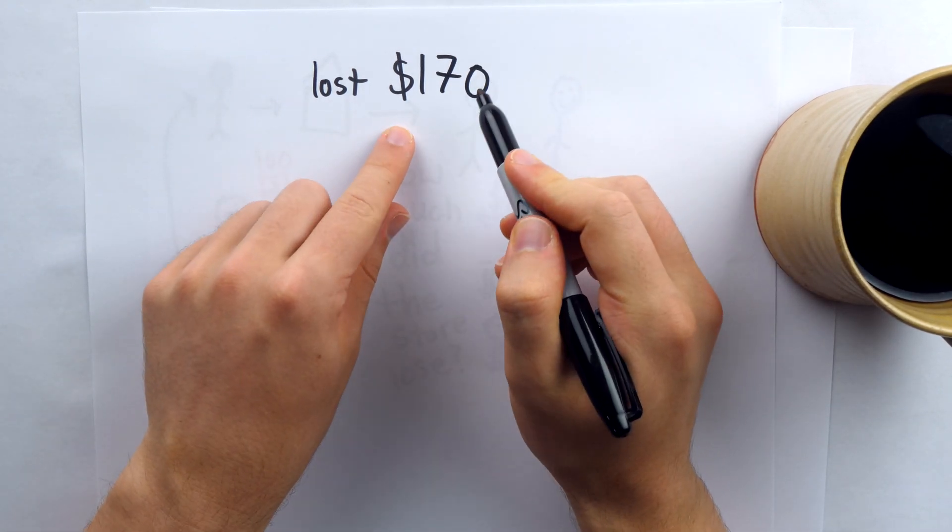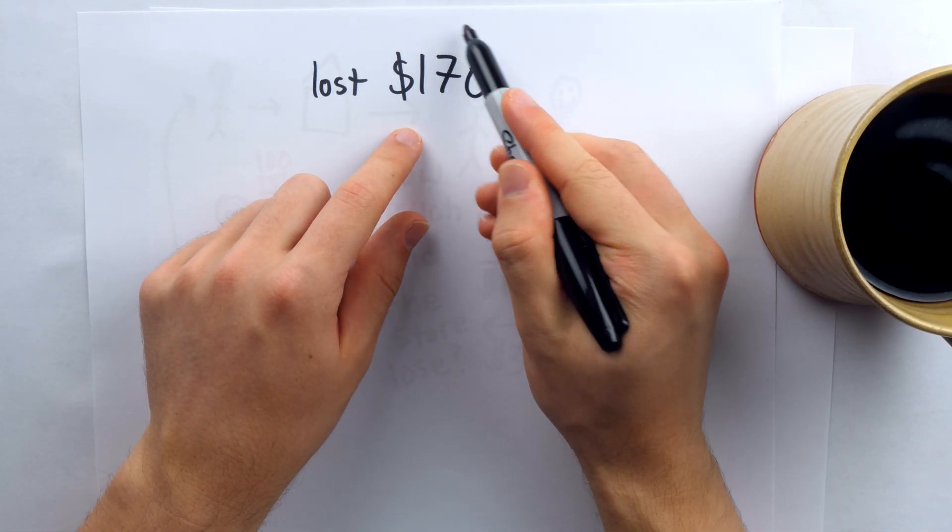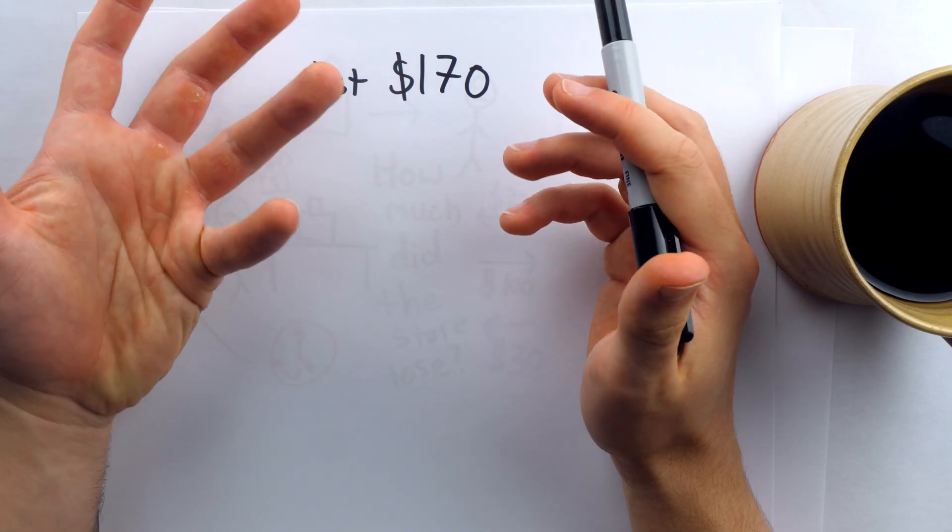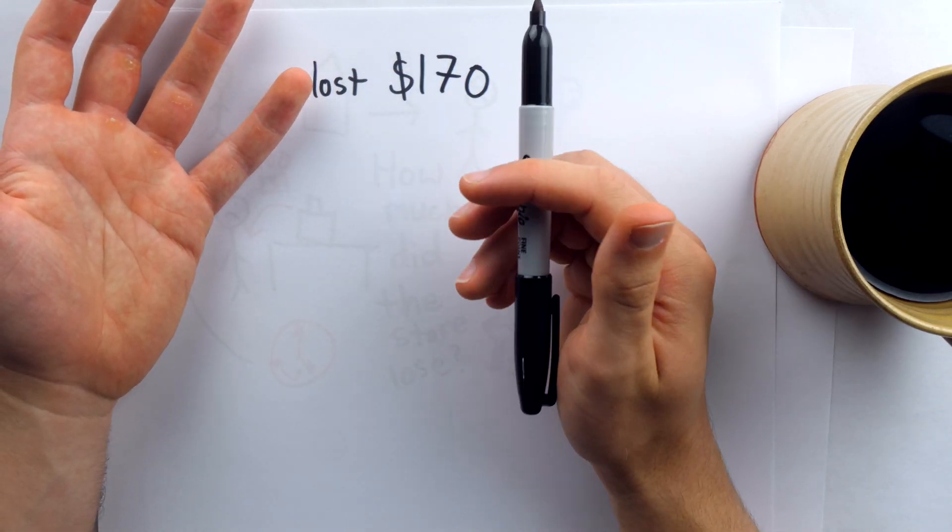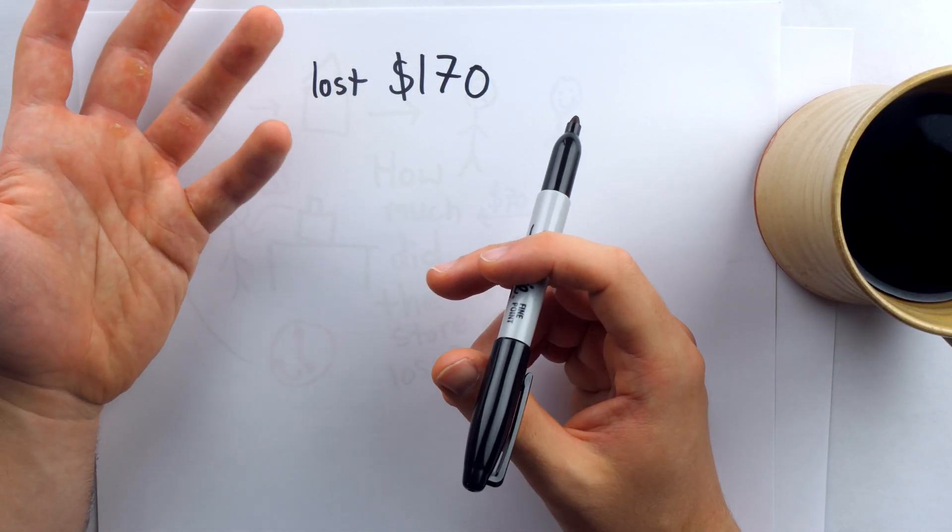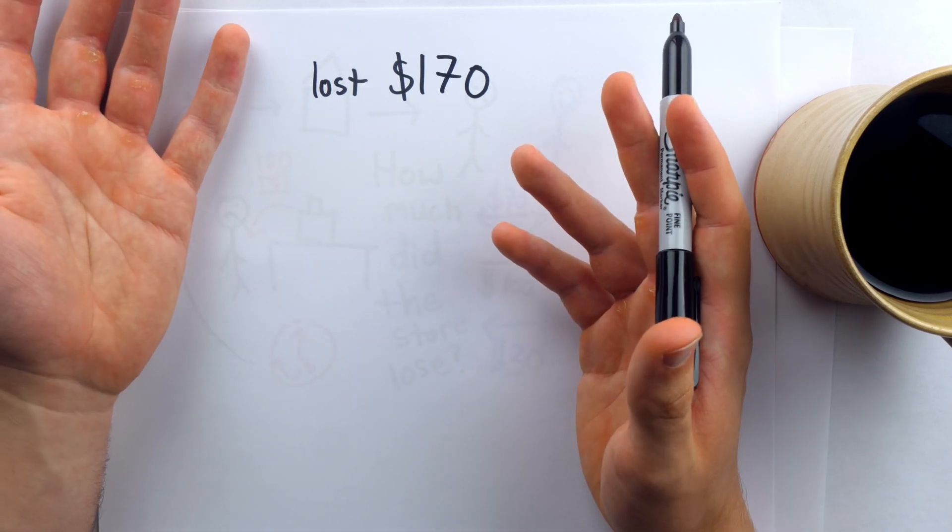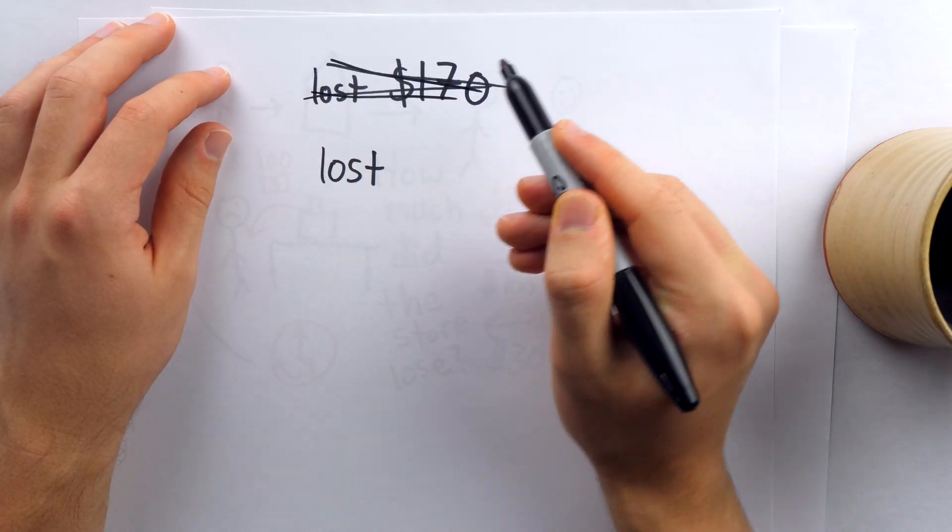You've got the $100 that the man stole, and then you have the $70 worth of goods, which were not obtained legitimately. The man bought them with a $100 bill that was taken from the store. But that is not correct.